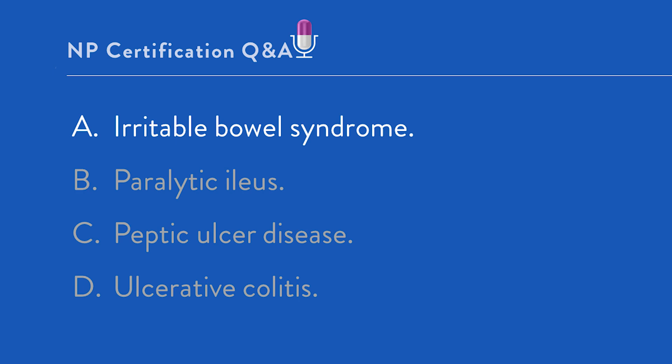Irritable bowel syndrome is considered to be a functional GI disorder characterized by abdominal pain and altered bowel habits in the absence of unique organic pathology. Note the word absence — this is why it's considered a functional GI disorder. The patient meets Rome 4 criteria for the diagnosis, which includes discomfort relieved by defecation, symptom onset associated with a change in stool frequency, or symptom onset associated with a change in stool form or appearance. Typical age of onset for IBS is prior to age 40, and symptoms are recurrent.